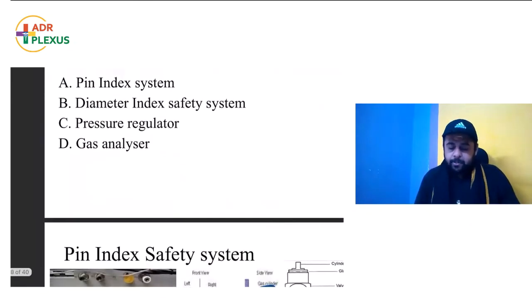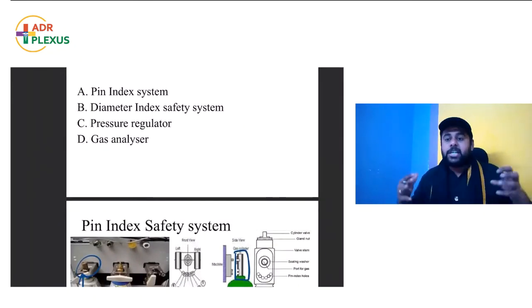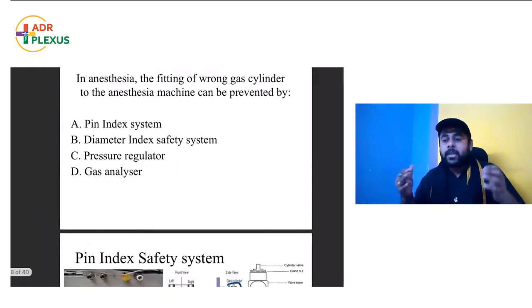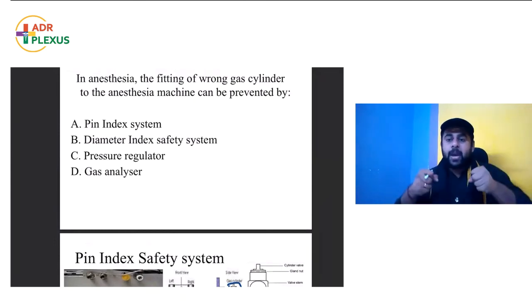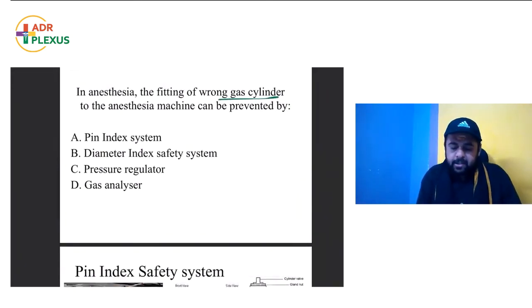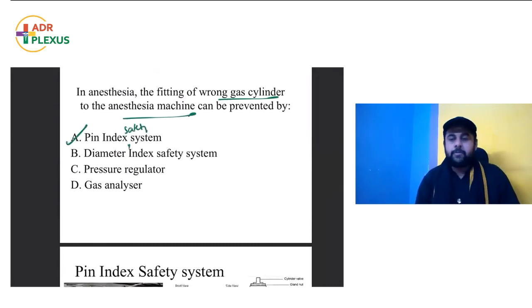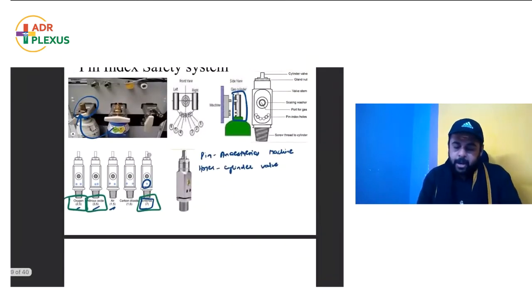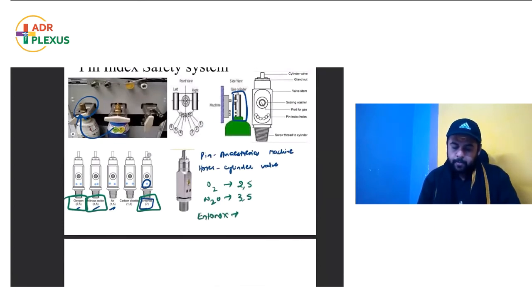The diameter index safety system is similar but applies to pipelines connecting to the anesthesia machine — different diameters prevent wrong pipeline connections. Since the question mentions wrong gas cylinder to the anesthesia machine, the answer is pin index safety system. Remember: oxygen pin index is 2,5; nitrous oxide is 3,5; Entonox is 7. Very important.